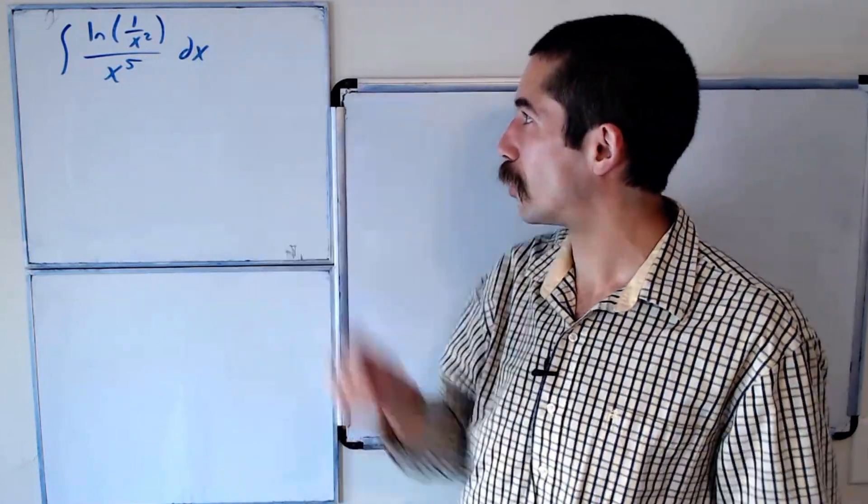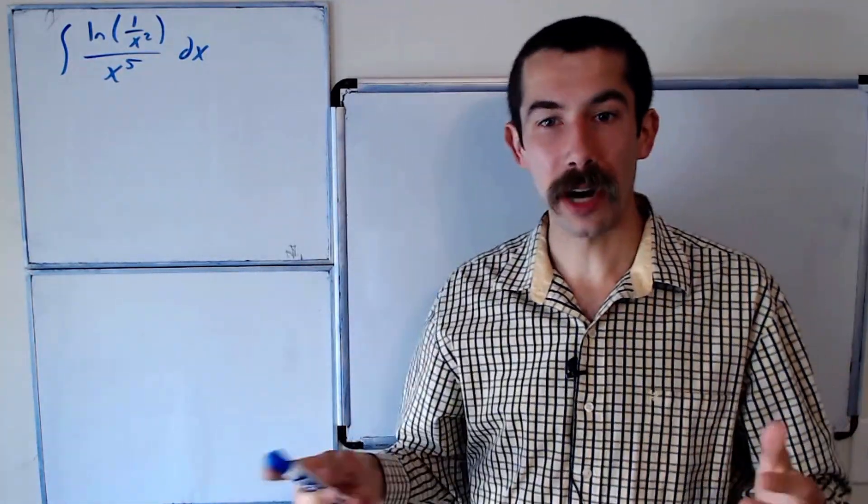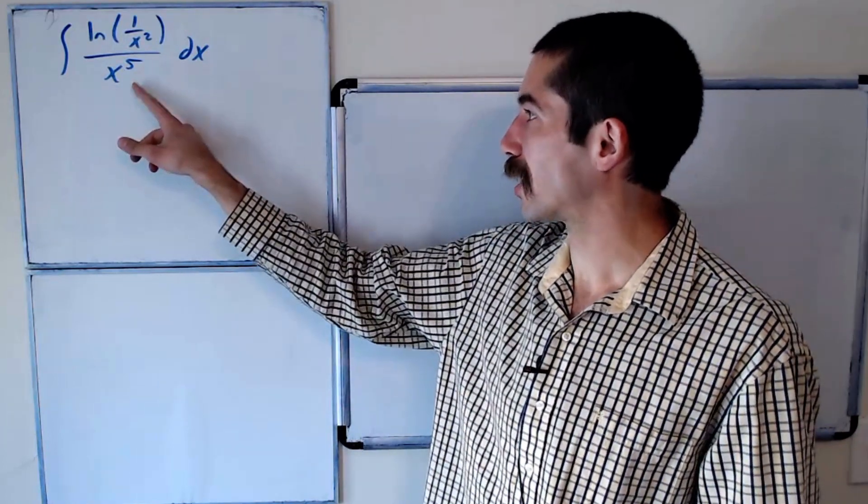Today we're going to do the integral of the natural log of 1 over x squared all over x to the 5th dx.